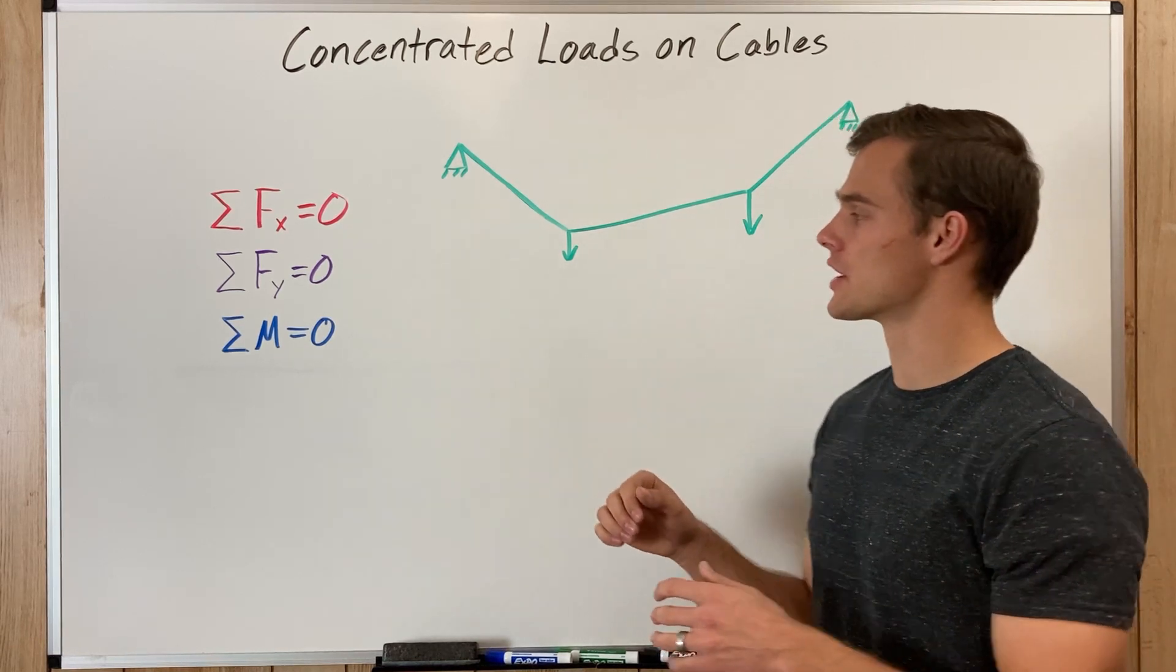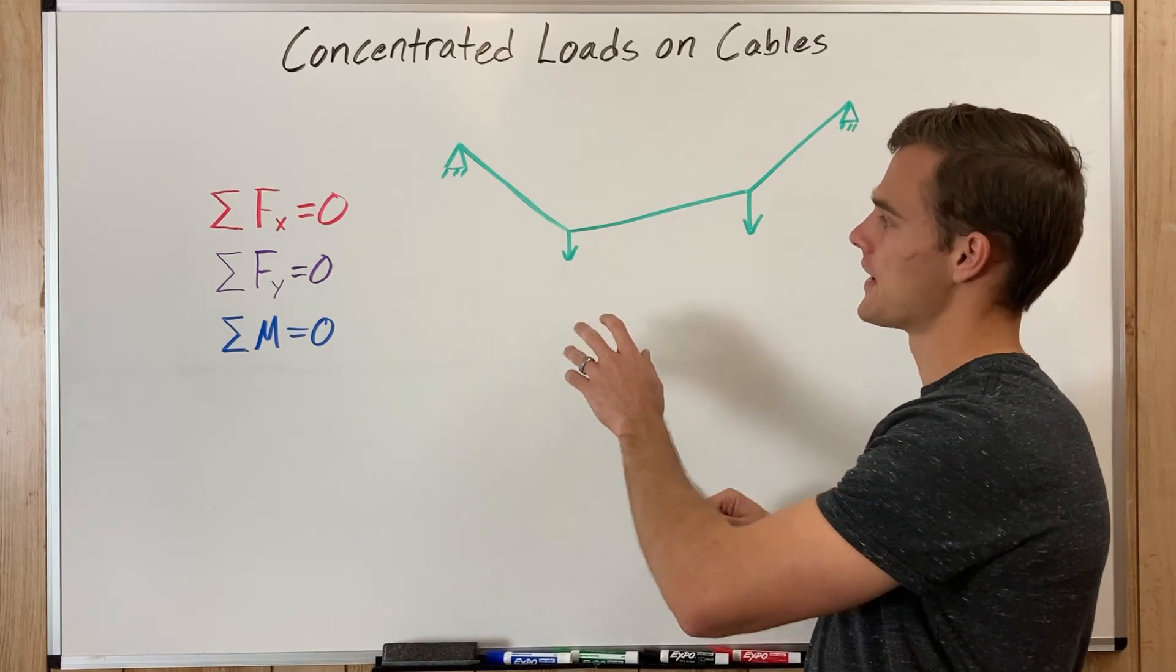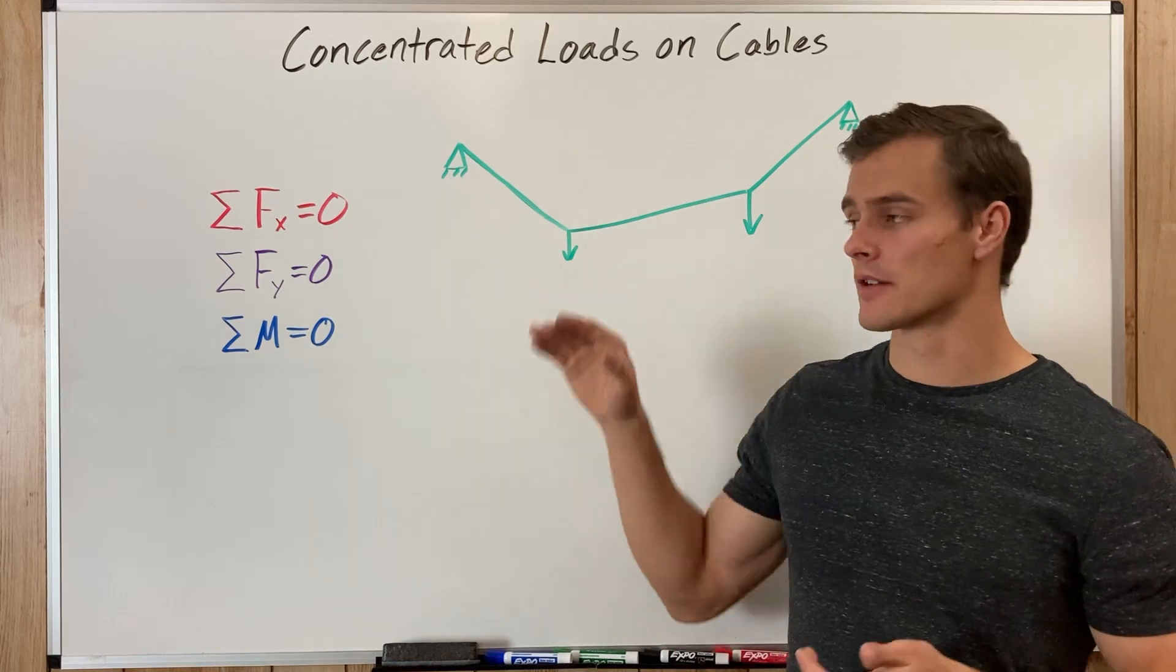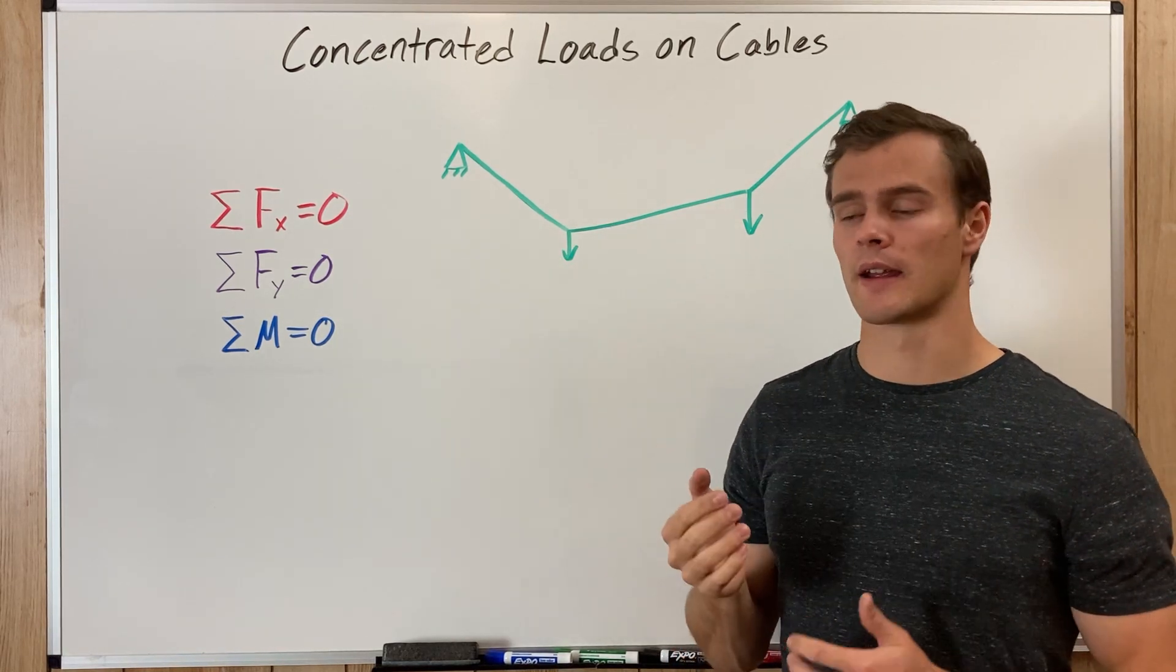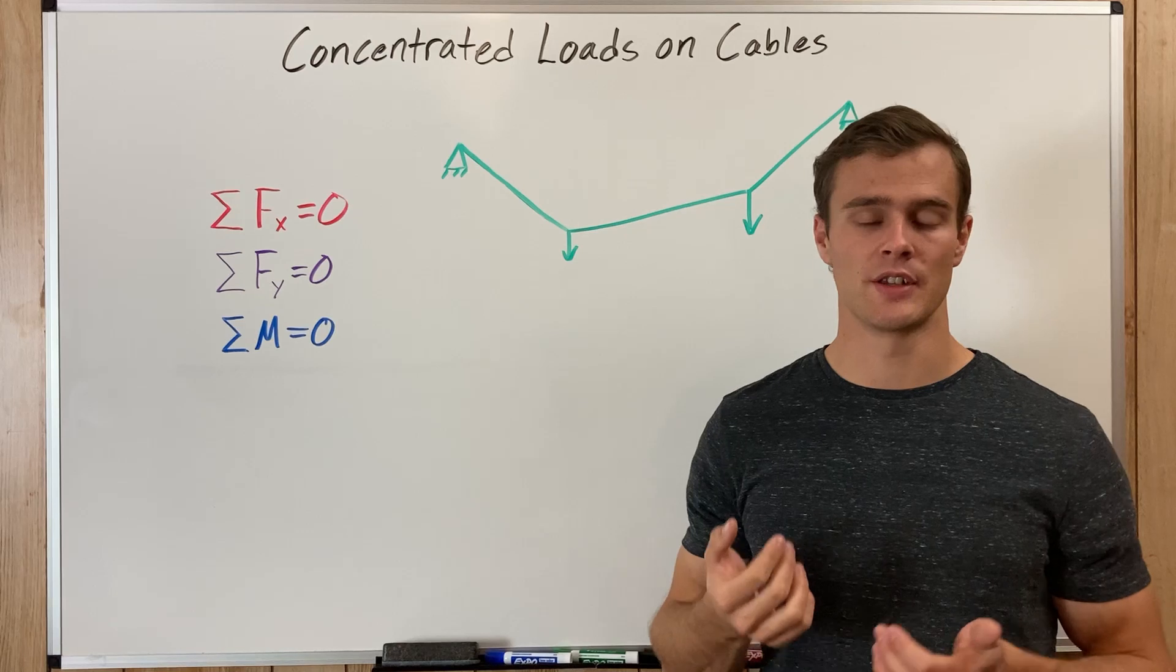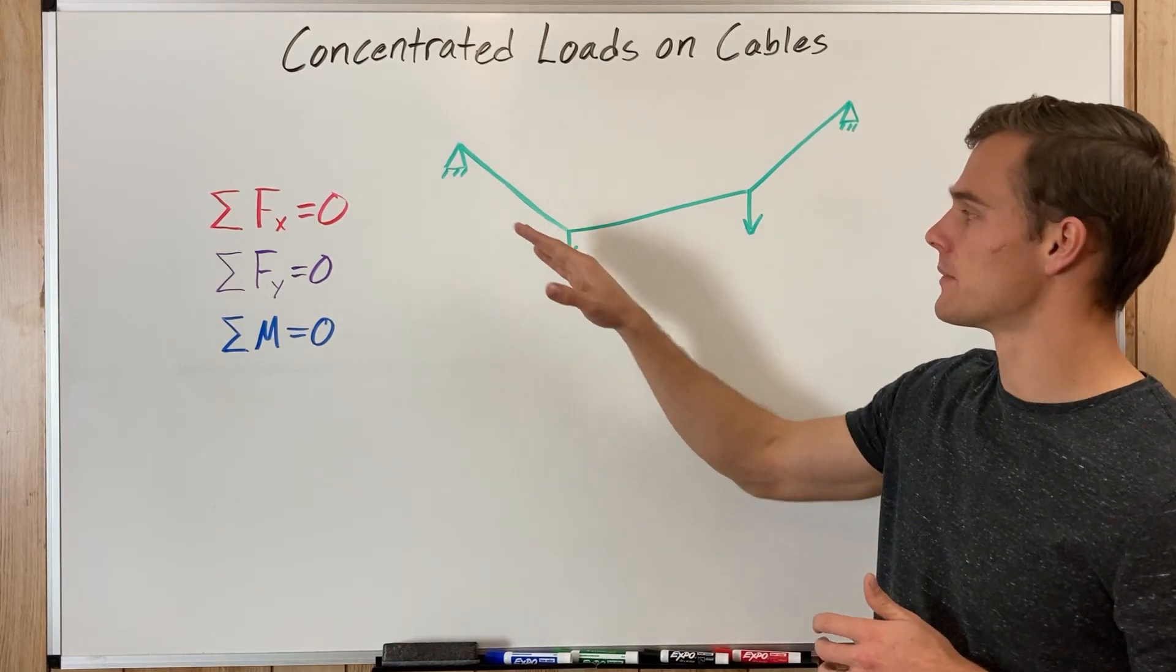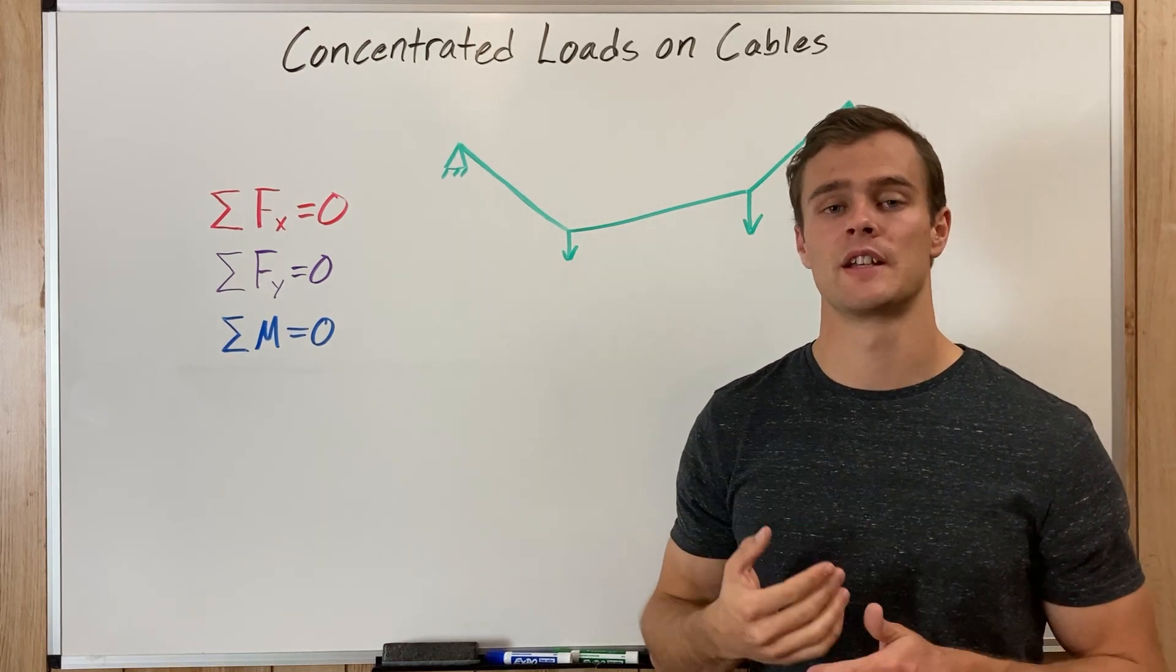What is going to change is the vertical component of the tension, and that will depend on the slope of each of these sections of cable. So the greater the slope, the more vertical tension that there is going to be in that cable. Sometimes you will be given the maximum tension that can be in the cable.